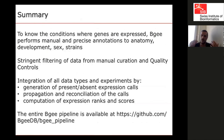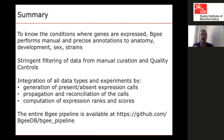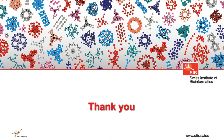In summary: to know the conditions where genes are expressed, we annotate anatomy, development, sex, and strain. We apply very stringent filtering through manual curation and quality controls — we are a secondary database that keeps only the highest quality data. We integrate all data by generating present/absent expression calls, propagating and reconciling these calls, and computing expression ranks and expression scores. The source code of our pipeline is available on GitHub — everything is open and checkable.